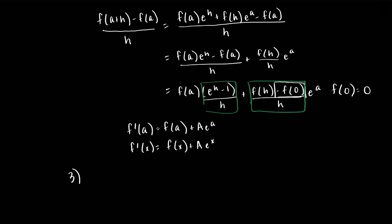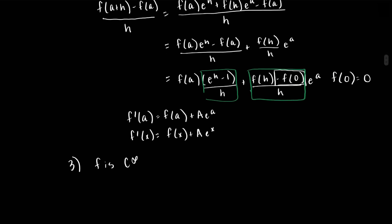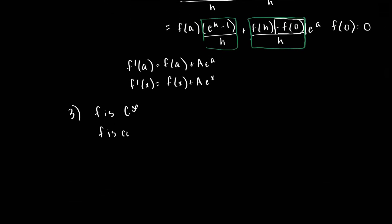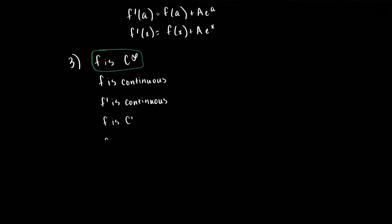Going further, we can show that f is infinitely differentiable, also called C-infinity. Indeed, f prime is equal to f plus a times an exponential. f is continuous because it is differentiable, and the exponential is continuous. Therefore f prime is continuous, which means that f is C1. By induction, this means that f is C-infinity. Note that we showed that f is a solution of the differential equation f prime minus f is equal to a times e to the x.